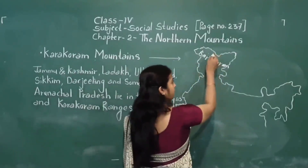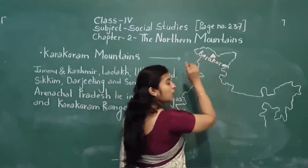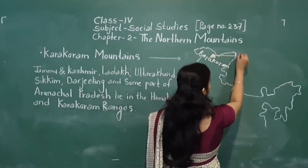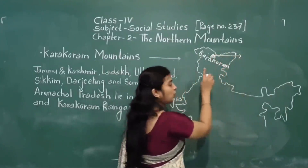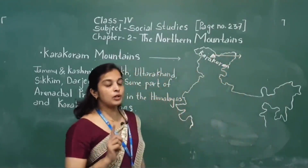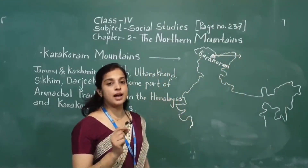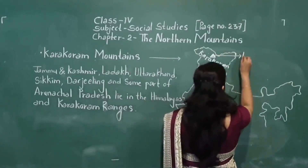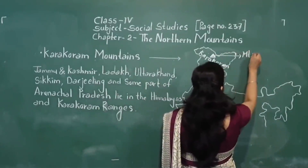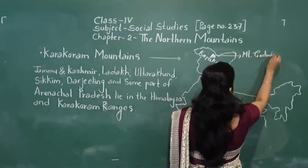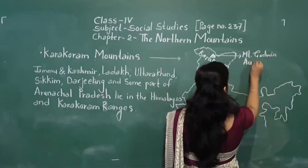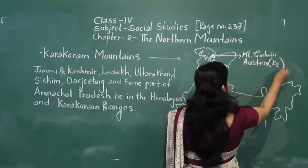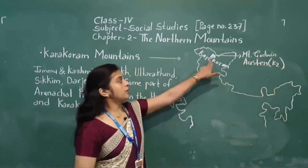See this — the Mount Godwin-Austen K2. This mountain is the highest mountain of the Karakoram range. Mount Godwin-Austen is also the highest mountain peak of India.